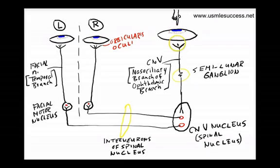What happens is initially we have a sensory branch of cranial nerve five that is going to be sent to the spinal nucleus of cranial nerve five. The branch that we're going to initially send this signal down is the nasociliary branch of the ophthalmic branch of cranial nerve five, which is your trigeminal nerve.